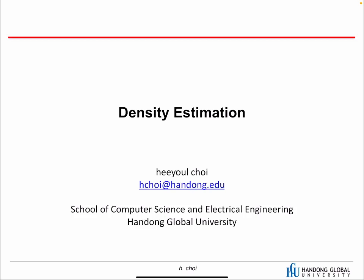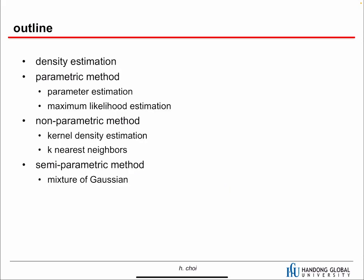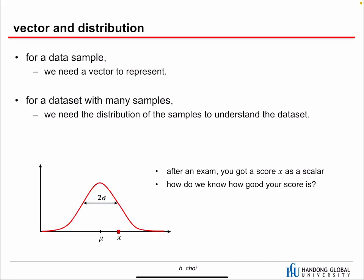In this chapter we're going to learn dense estimation. In pattern recognition, all algorithms implicitly or explicitly do dense estimation. We'll cover a couple of methods: first we'll talk about what dense estimation is, then parametric, non-parametric, and semi-parametric approaches. For the parametric method we'll learn parameter estimation and maximum likelihood estimation. As a non-parametric method we'll learn KDE and k-nearest neighbors, and as a semi-parametric method we'll discuss mixture of Gaussians.